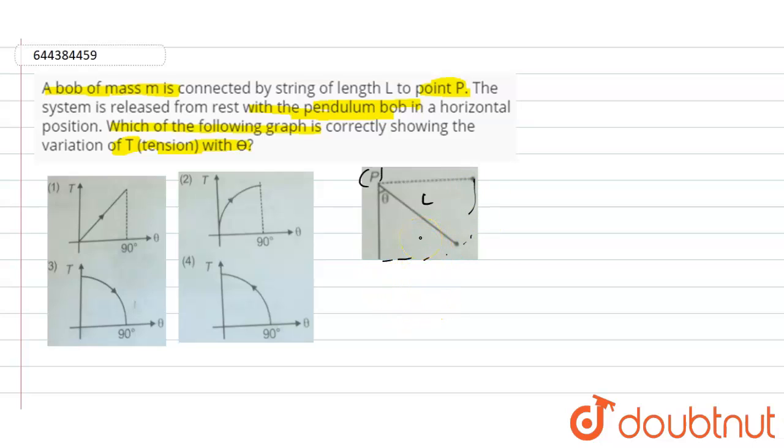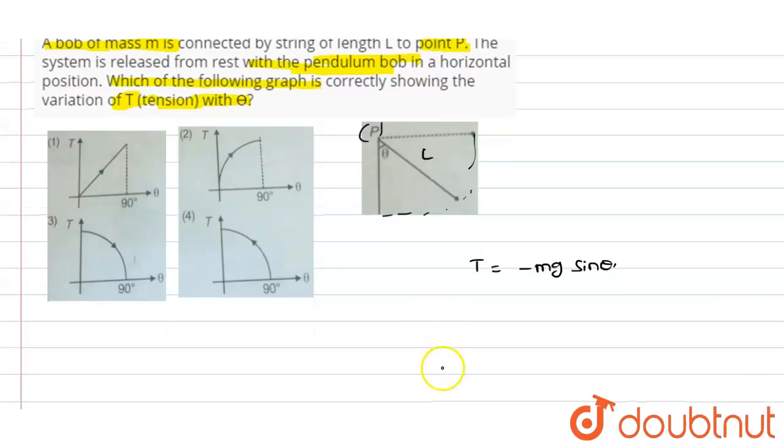Capital T equals minus mg sine theta. We know that the sine theta value will be similar to the theta angle only, using the small angle approximation.